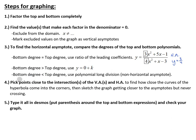If the top degree is bigger than the bottom — so it's top heavy — you'd have to use polynomial long division. For non-honors algebra, we won't make you do those ones by hand, but you do get something called a slant asymptote that your graph curves towards.